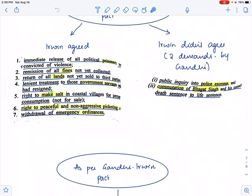He also gave the right to make salt in the coastal villages. He said that the coastal villages can now indulge in making salt and it would be their prime right. However, he said that the coastal villages can only make salt in order to consume it. They can't make salt to sell the salt. So there was no right to sell the salt that was given.